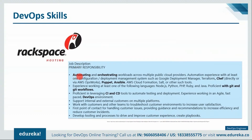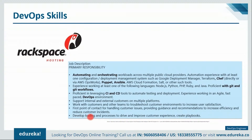Rackspace wants someone who can automate and orchestrate workloads across multiple cloud providers, with automation experience in at least one configuration or deployment management system such as Google Deployment Manager, Terraform, Chef, Puppet, or Ansible. They should have experience with at least one language like Node.js, Python, PHP, Ruby, or Java, and good hands-on knowledge with Git and Git workflows. They should be proficient with CI/CD tools like Jenkins to automate testing and deployment, able to troubleshoot customer environments to increase user satisfaction, and able to develop tooling and processes to improve customer experience and create playbooks.